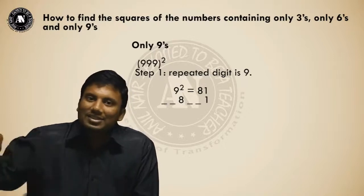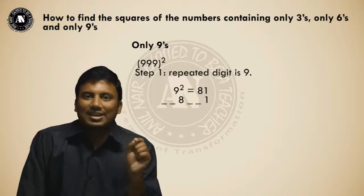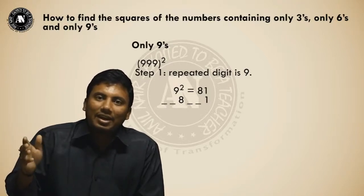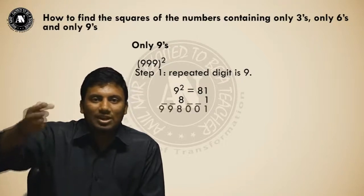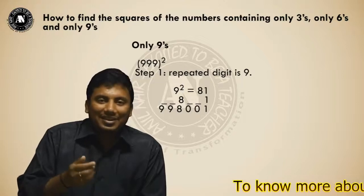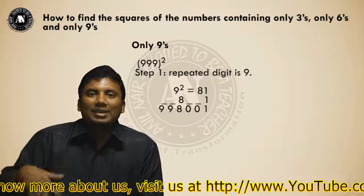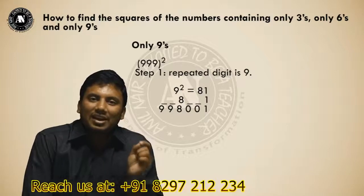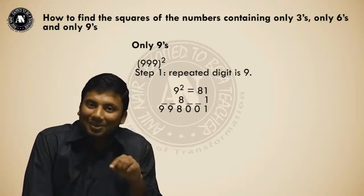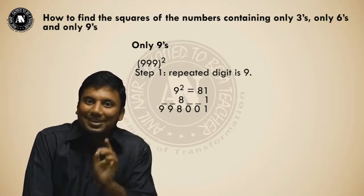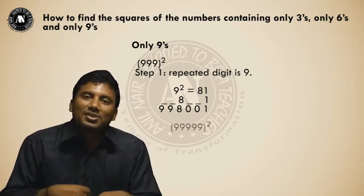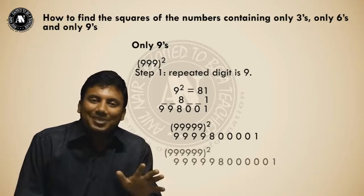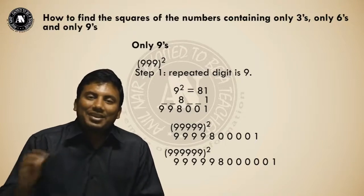The digit before 1 is obtained by subtracting one: 1 minus 1 equals 00. The digit before 8 is obtained by adding one: 8 plus 1 gives 9s. So 999 squared equals 998001 — that's two nines, eight, two zeros, one. Three nines give two nines and two zeros in the answer. For five nines squared: four nines, eight, four zeros, one. For six nines squared: five nines, eight, five zeros, one.